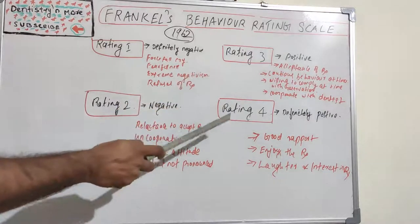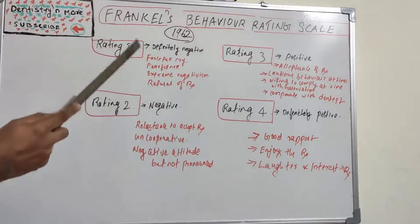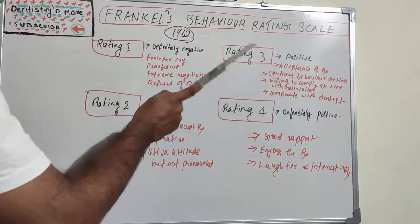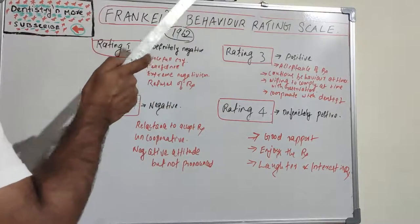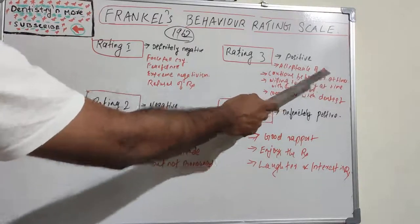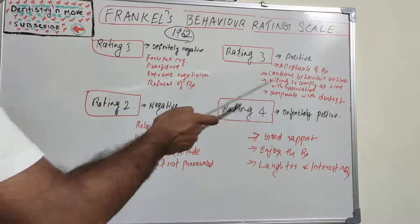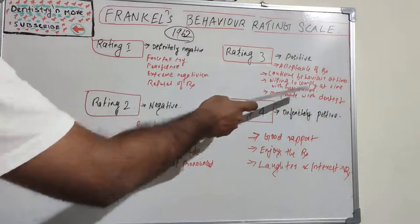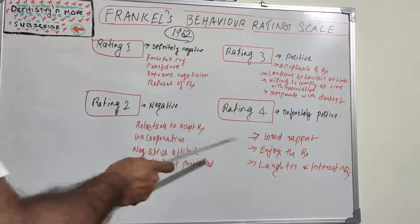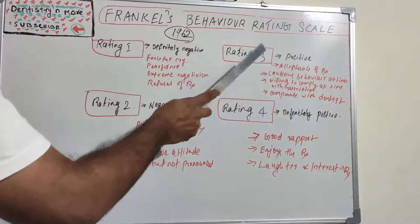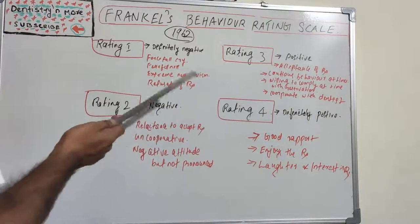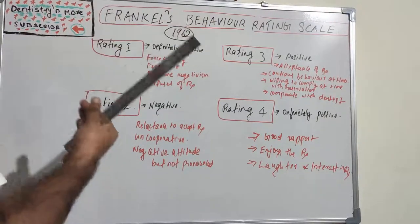Ratings three and four are on the positive side, whereas one and two are on the negative side. Rating three is mentioned as 'Positive.' These kids accept treatment but they are cautious, and they express cautious behavior at times. They are willing to comply with the dentist but with a little bit of reserved character — the patient follows the dentist's directions cooperatively but with some reservation.